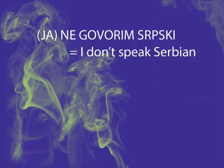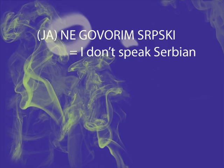you might want to tell someone that you don't speak Serbian. That would be: ja ne govorim srpski. Ja is in brackets because you can omit it — you can just say ne govorim srpski. Notice the -m sound at the end of the verb, indicating first person singular.